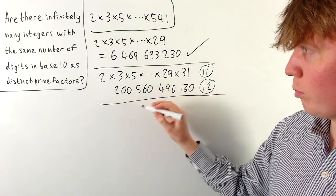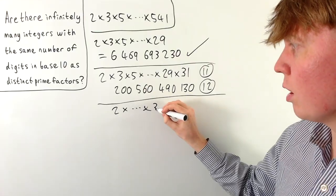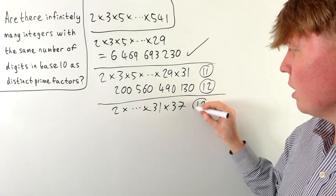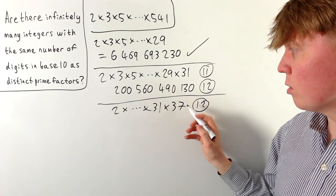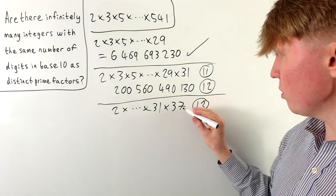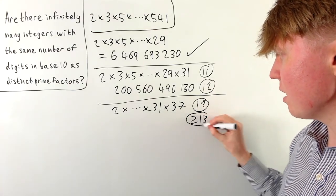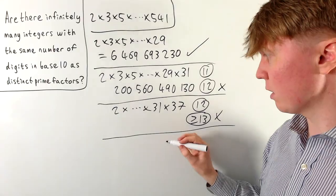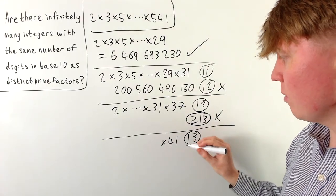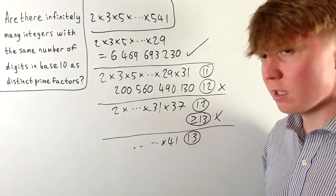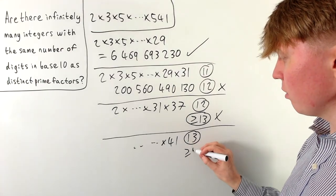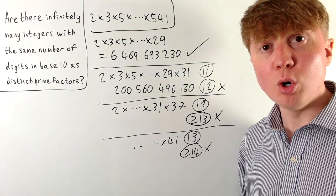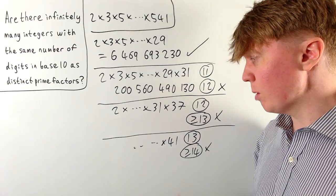Trying twelve prime factors makes things worse. We'd multiply the first eleven primes up to 31, then by the next prime, 37. But we've already seen that the product without 37 has twelve digits, so multiplying by 37 gives at least thirteen digits — it won't work. For thirteen prime factors, we'd also multiply by 41, but we'd be multiplying something with at least thirteen digits by 41, giving at least fourteen digits. The problem keeps getting worse as we add more primes bigger than ten.